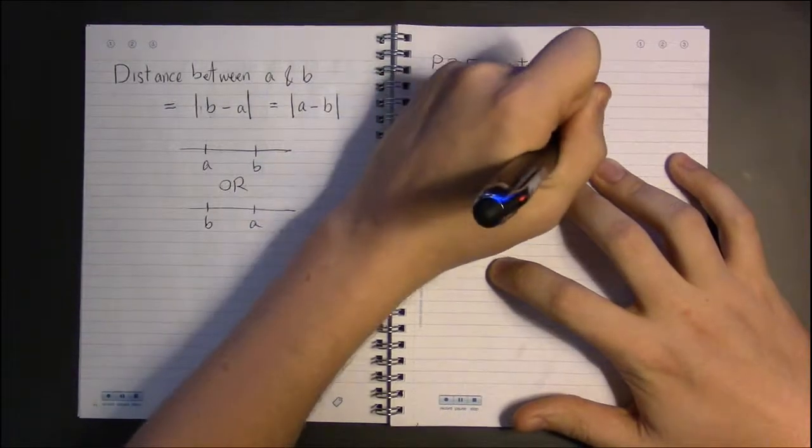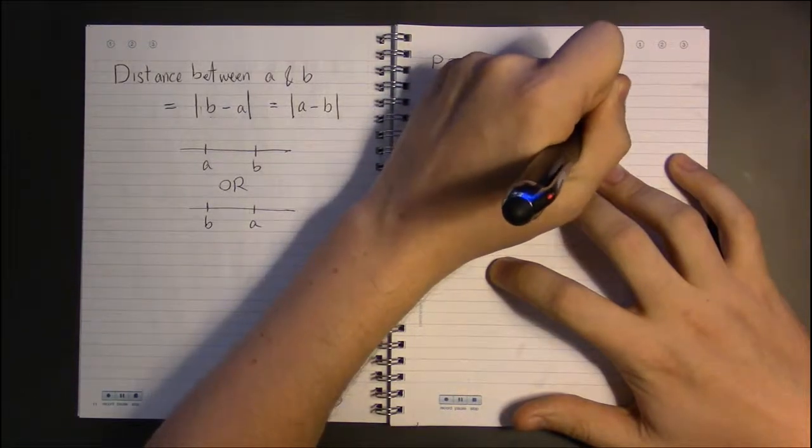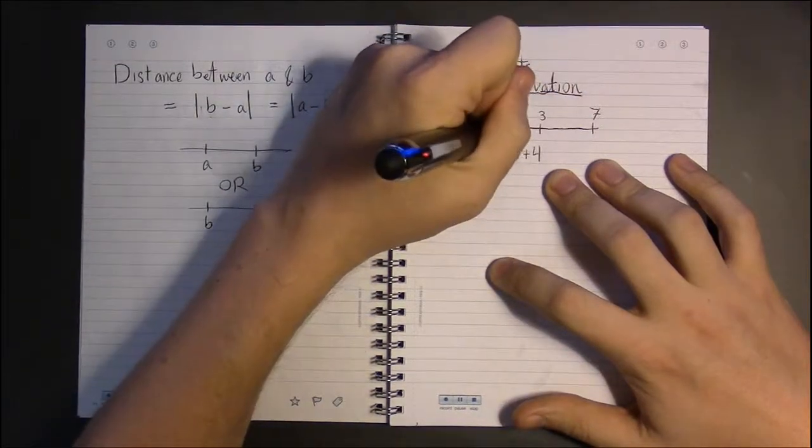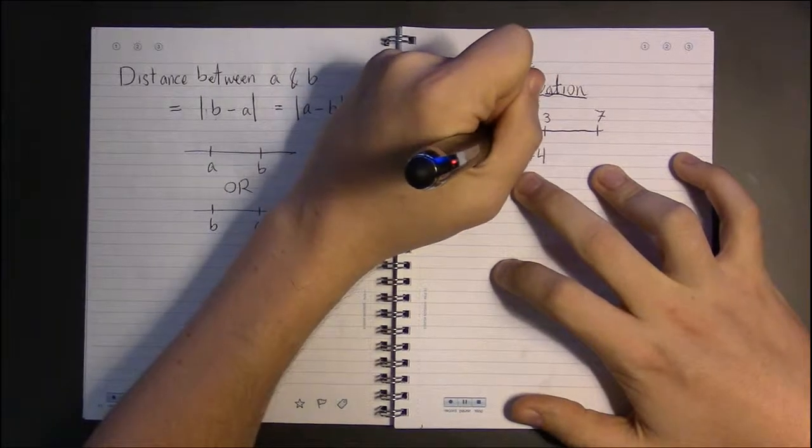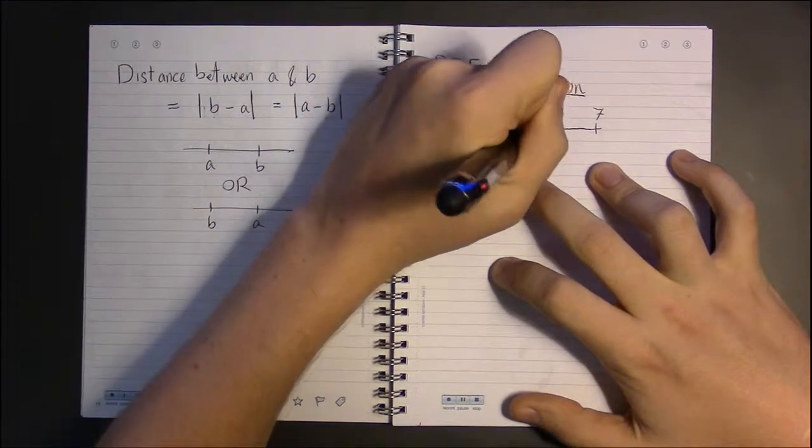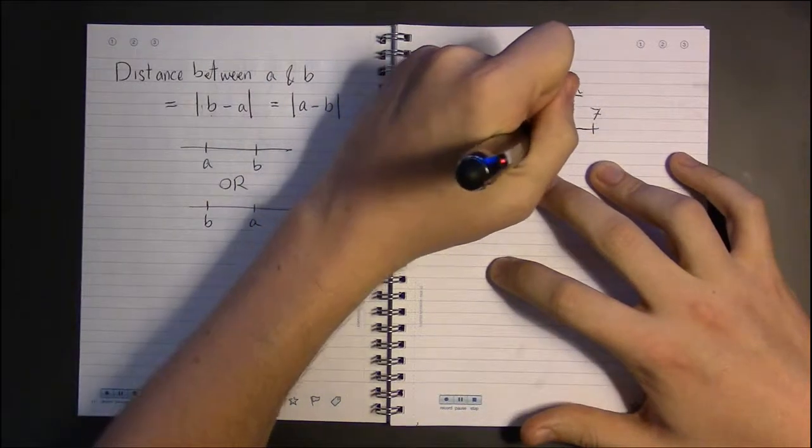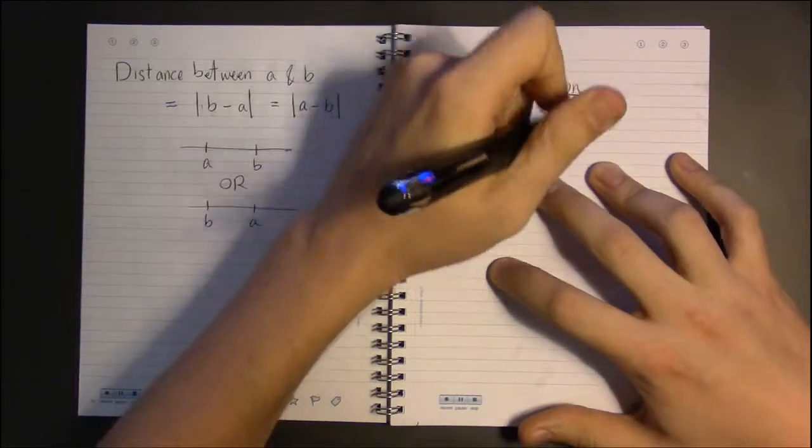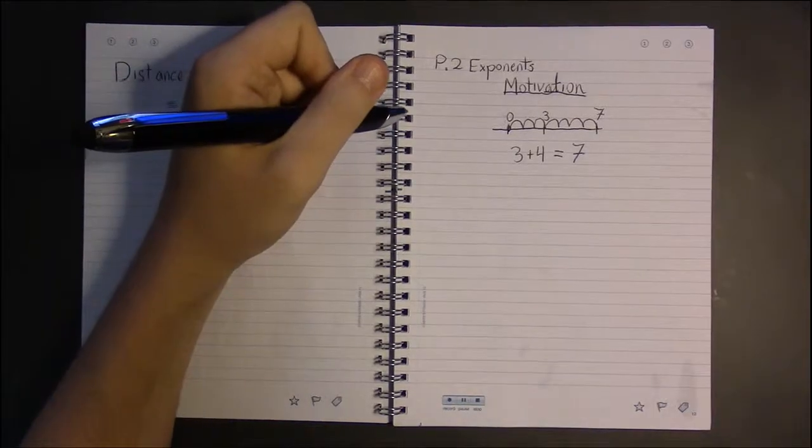If we look at, say, something like 3 plus 4, you start at 0, move 3 places, 1, 2, 3, and then move 4 more places, 1, 2, 3, 4. Where you end up, that's your answer for the addition.